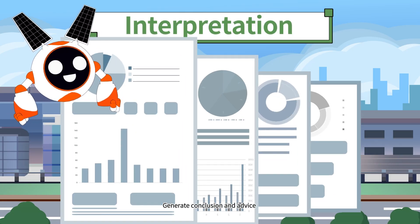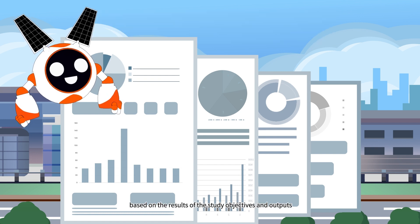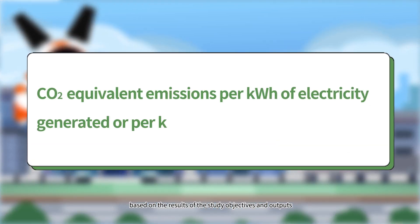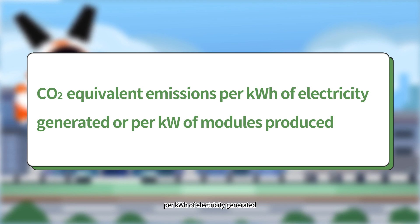Step 5: Calculation of carbon dioxide equivalent emissions per kilowatt hour of electricity generated, or per kilowatt of modules produced.